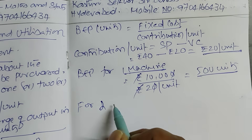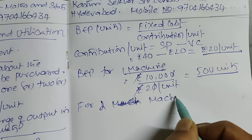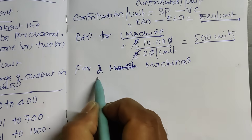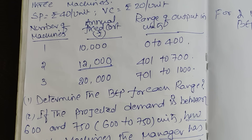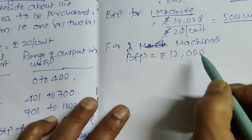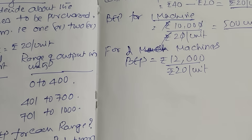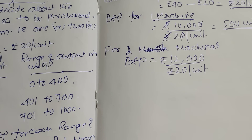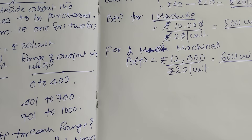For two machines: breakeven point equals fixed cost of Rs.12,000 divided by Rs.20 per unit contribution. This equals 600 units.